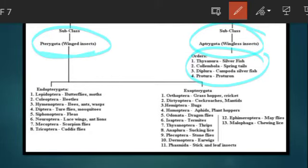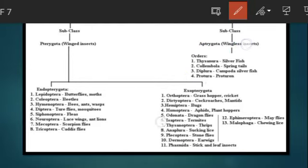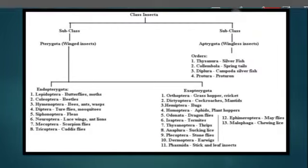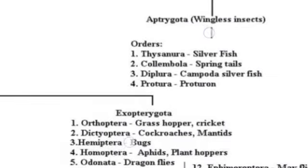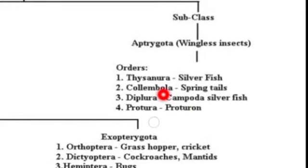And Pterygota — obviously you might have understood — they bear wings. That's why they are included in the Pterygota category. Now here in Apterygota, there are four orders. I will just zoom it out so that you can see them easily. So in the Apterygota subclass, there are four orders.